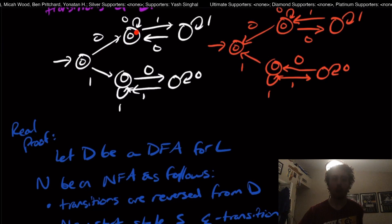But now we're going to make a brand new start state, and I'm going to call it S, that has an epsilon transition from S to all previously final states.